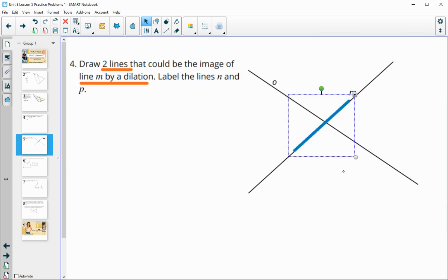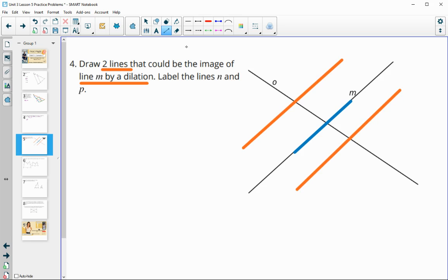So any of these lines would work. You can just draw any two lines, they just need to be parallel to the original line M. So this could be one, this could be one, and then you just need to label those. And so it said label one of them N and one of them P.